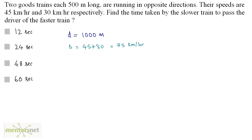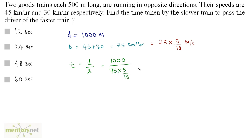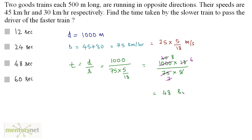Converting the relative speed to meters per second: 75 × 5/18 m/s. Time equals distance upon speed: 1000 divided by (75 × 5/18), which equals 1000 × 18 divided by (75 × 5). Since 25 × 3 equals 75 and 25 × 40 equals 1000, simplifying gives 8 × 6 equals 48 seconds. So option C is the correct answer.